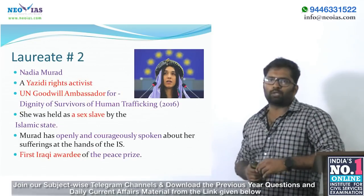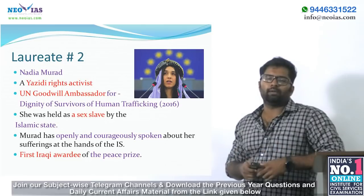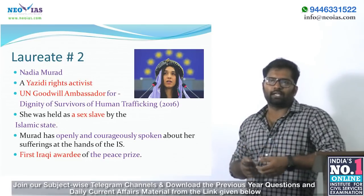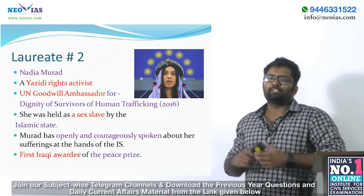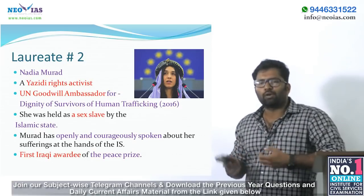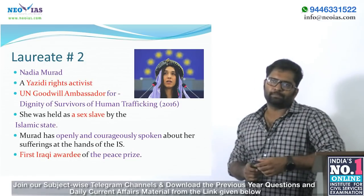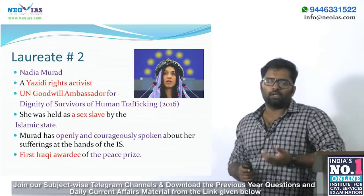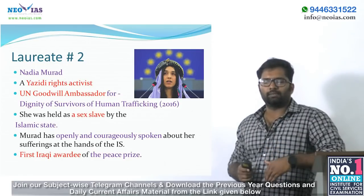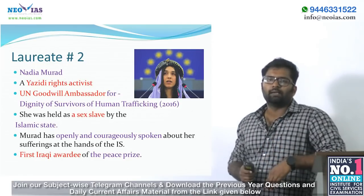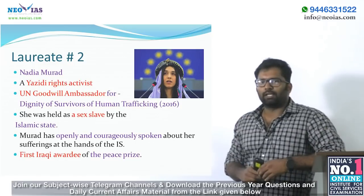The second laureate is Nadia Murad, a Yazidi rights activist. In 2016, the UN appointed her as Goodwill Ambassador for the Dignity of Survivors of Human Trafficking. She was held as a sex slave by the Islamic State and has openly and courageously spoken about her sufferings. She is the first Iraqi awardee of the Peace Prize. Importantly, the Nobel Peace Prize is announced by the Norwegian Nobel Committee, not any Swedish academy.